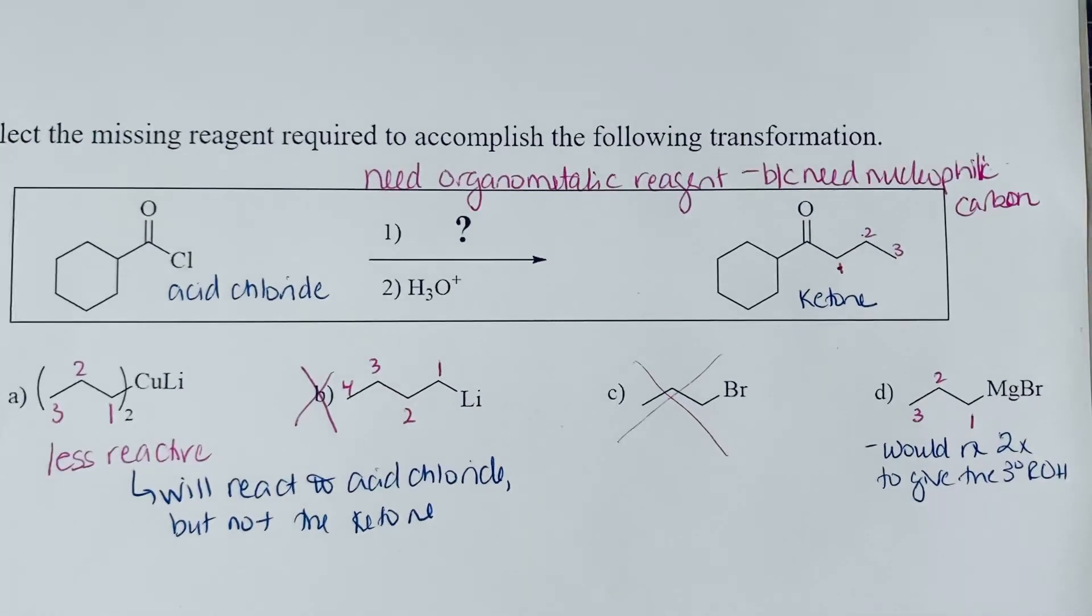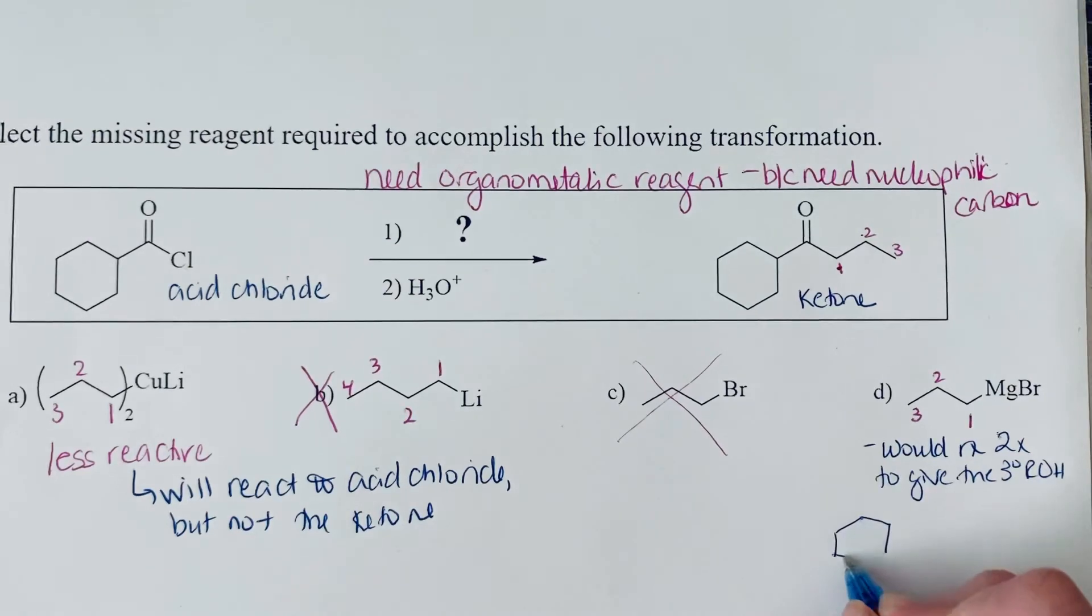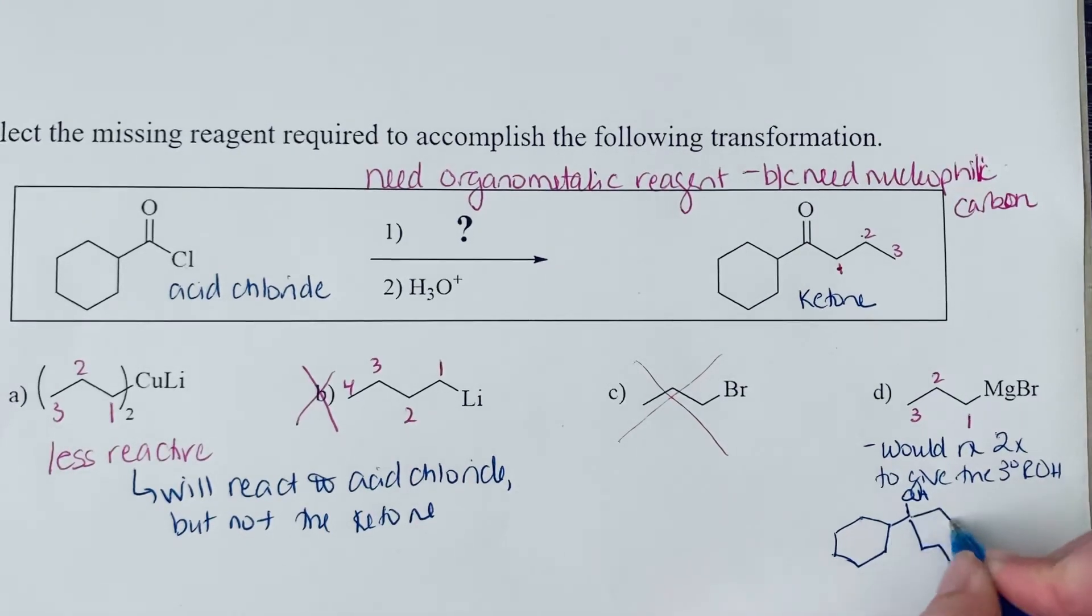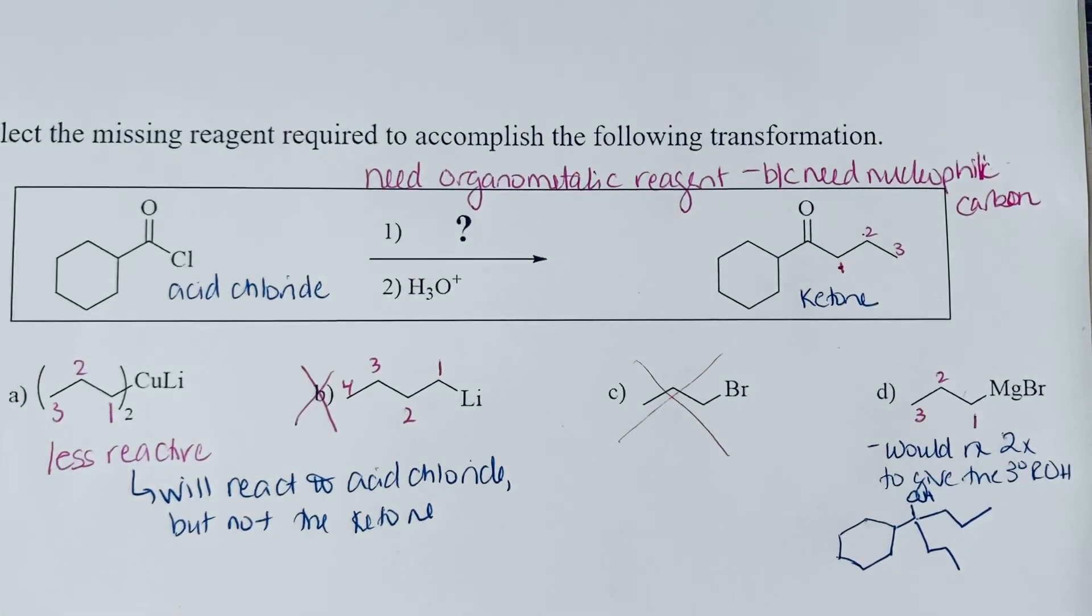And I can quickly draw what that tertiary alcohol would look like. It would look like this if we had the Grignard reagent. So there's the OH, and you would have added two of these propyl chains if you used the Grignard.